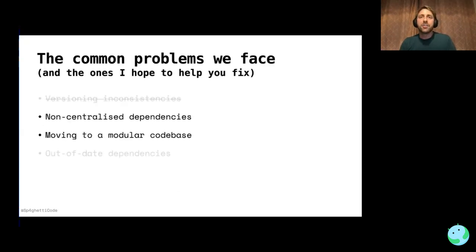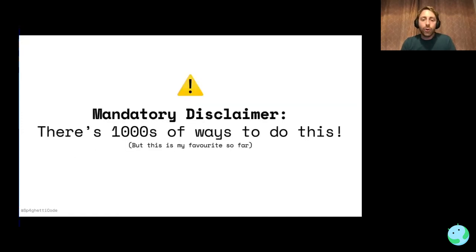Next, I'm going to address two related issues. We often find ourselves with non-centralized dependencies — copying and pasting dependency code across multiple modules. It's a pain. When moving to a modular codebase, we want a single area of access for our dependencies to be defined. There are thousands of ways to do this, and I'll talk through my favorite way. It certainly isn't the only way, so please let me know if you have better approaches.